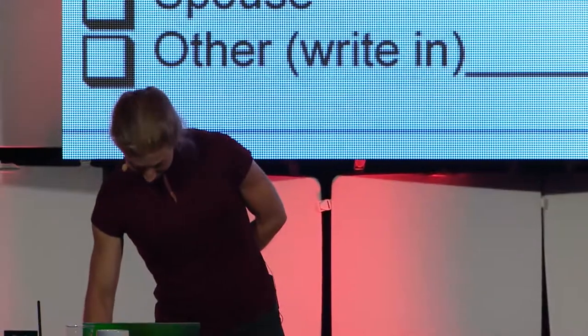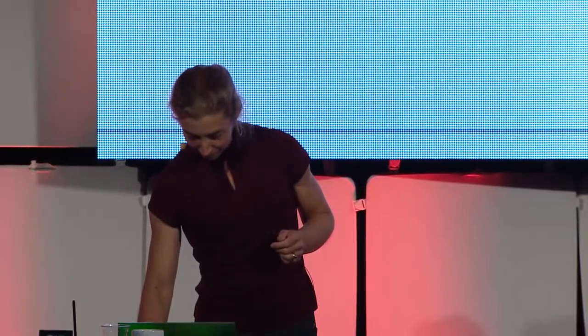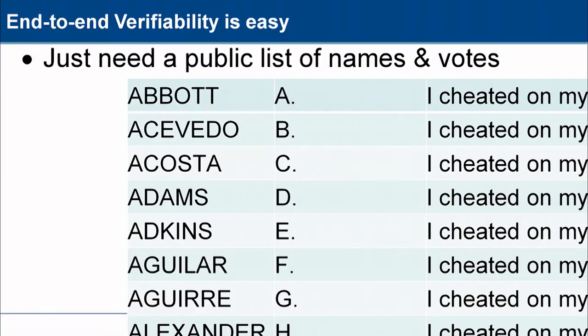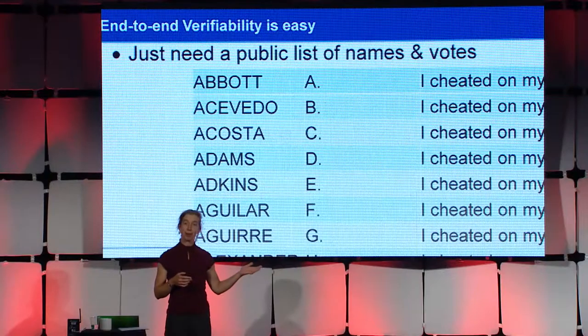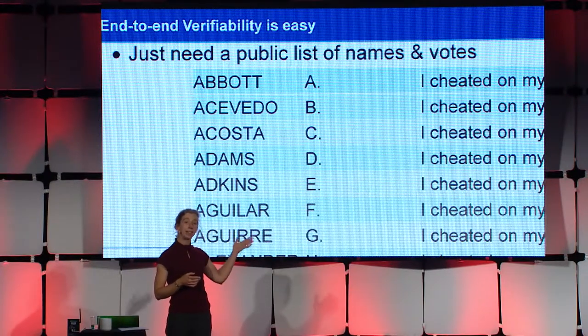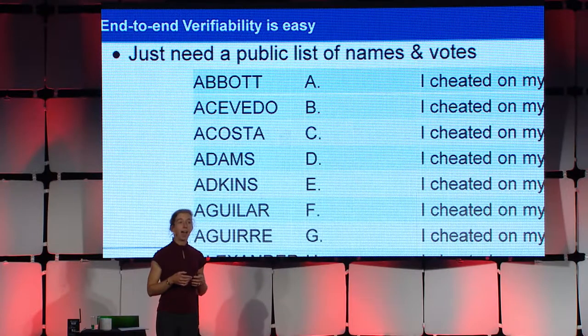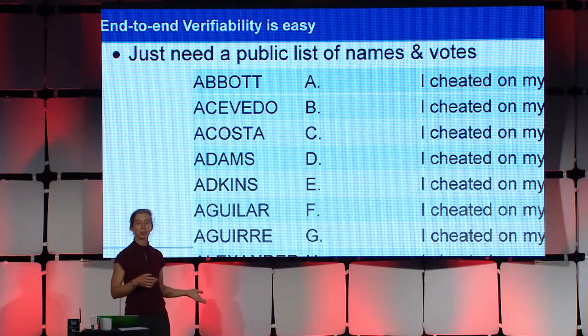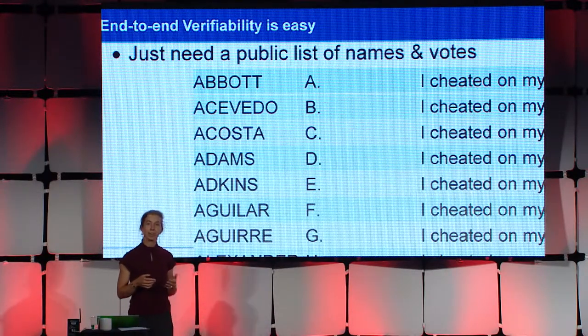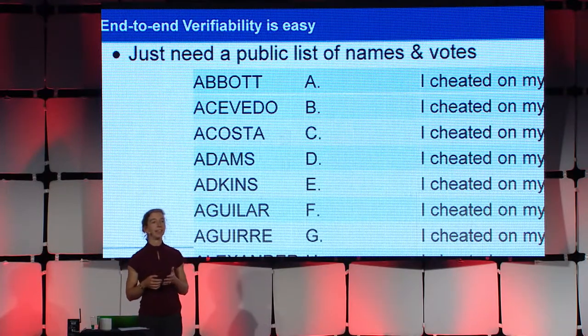The first lesson from this little survey — I mean election — is that getting evidence of the right election outcome is really easy. All we need to do is get all the voters in the same room and publish the complete list of public names and votes. If everybody can see the same public list of their inputs, and everybody can check that their own vote is accurately represented in the list, and then everybody can look through the entire list of contributions and double-check the tally, then we have very good evidence that the election outcome is exactly what the voters wanted.